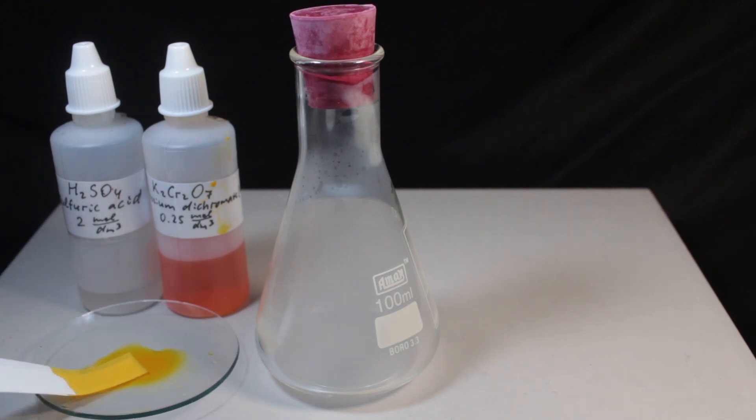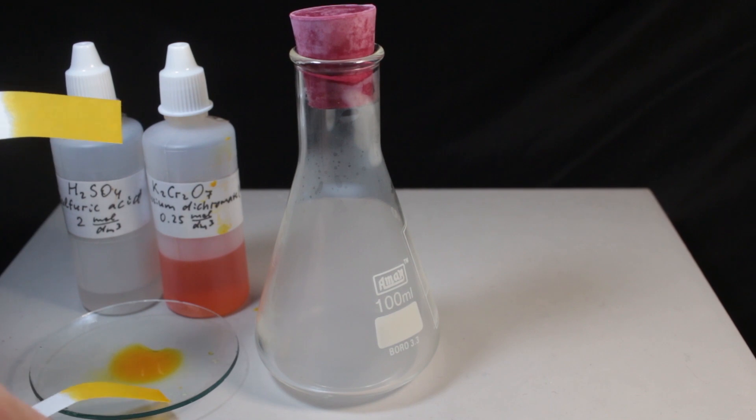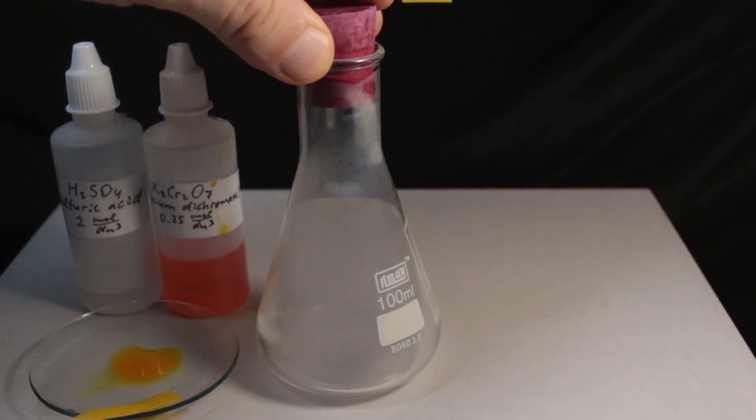Here is filter paper. I dip it in acidified potassium dichromate. One I keep as control and another I put in the gas.